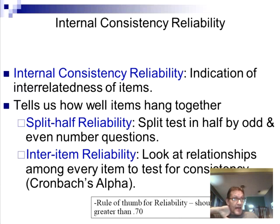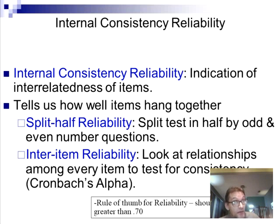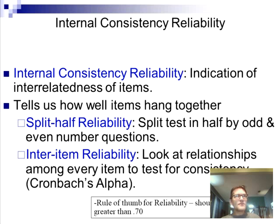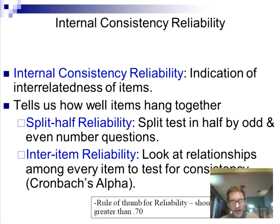We can talk about internal consistency reliability, and in particular split-half reliability. If we give somebody a test that has 50 items, we look at their score on the first 25 and their score on the second 25 and calculate a correlation between them — that's your split-half reliability. You could also do odd versus even items. There's actually a tests and measurements course here at Wesleyan that gets into this in a lot of detail.